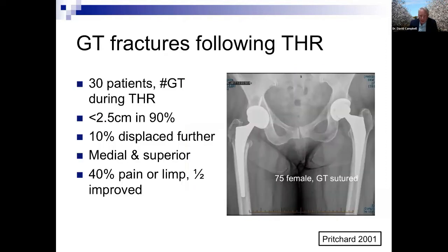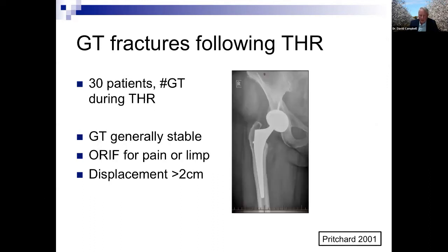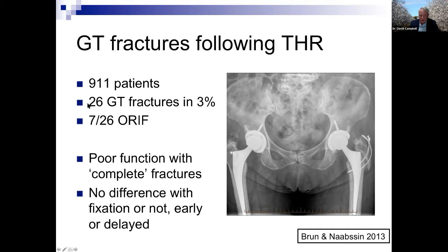Regarding trochanteric fractures in elective hip replacement: there are a few small series of around 30 patients. Pritchard, about 10 years ago, suggested leaving them if less than 1 cm displacement, similar to Masri's recommendation. However, 10% displaced further — especially medially — and those patients had pain and a limp. Another group of 26 fractures showed that complete fractures did poorly, and it did not matter whether fixation was immediate or delayed.